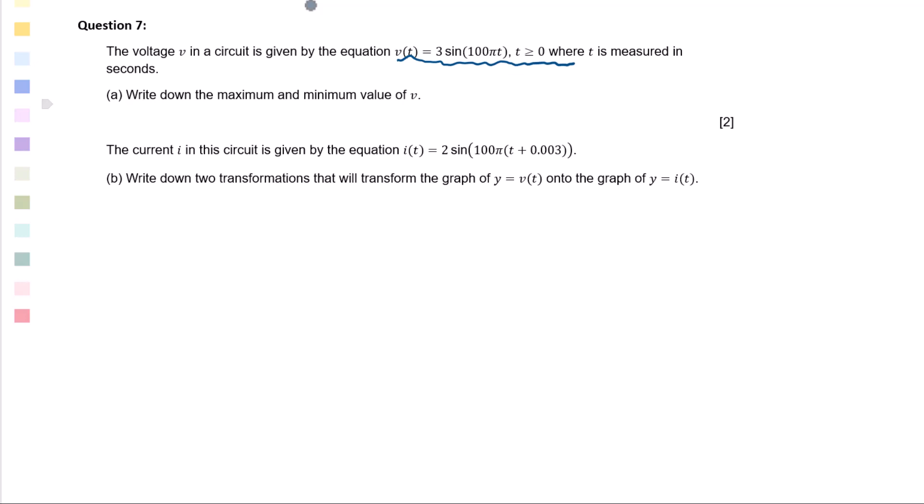Part A: Write down the maximum and minimum value of v. We can figure out the amplitude equals 3. Midline y = d = 0. Maximum = d + amplitude. Minimum = d - amplitude.